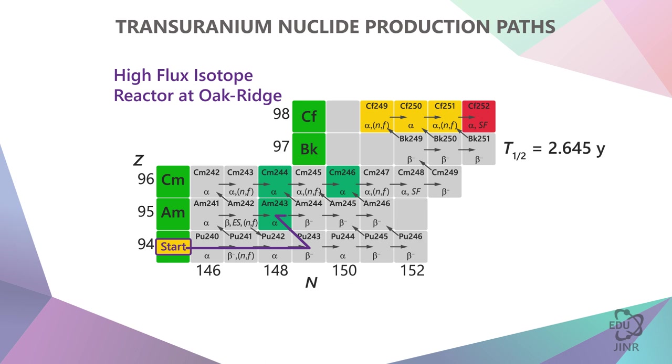It in turn is captured again, and beta decay takes place once more. The next stage is curium, which is also captured, leading to berkelium and then californium.